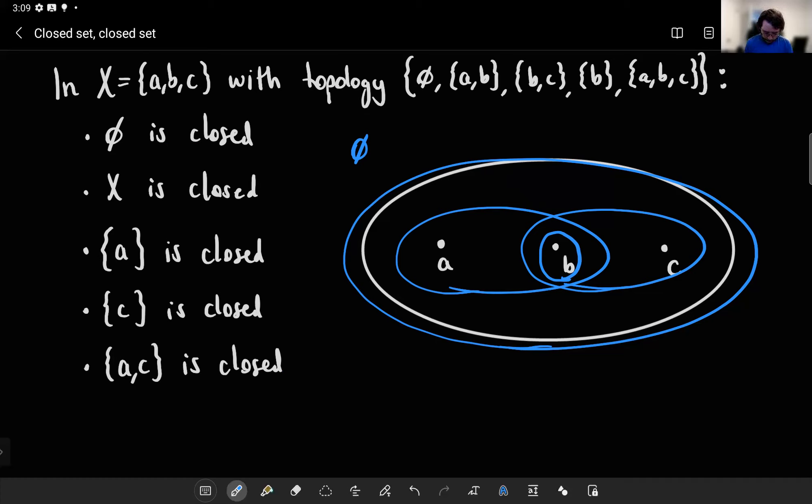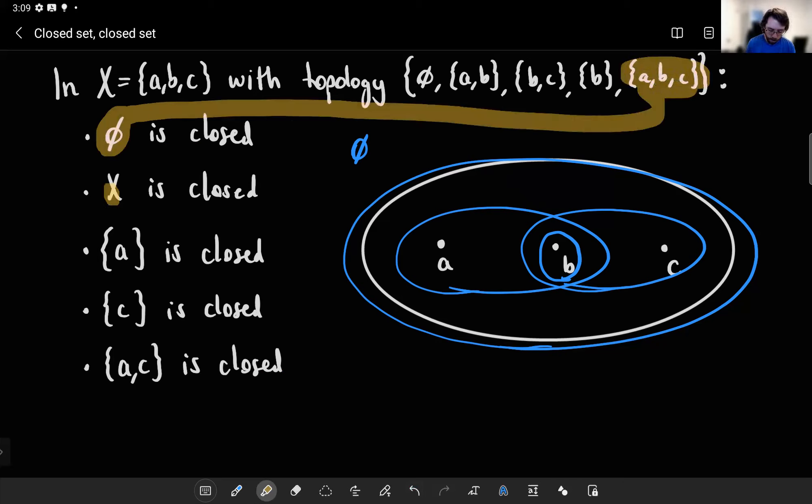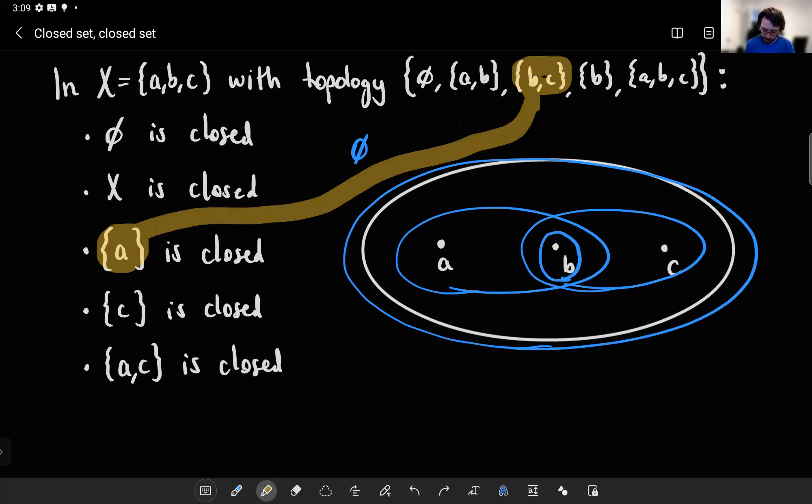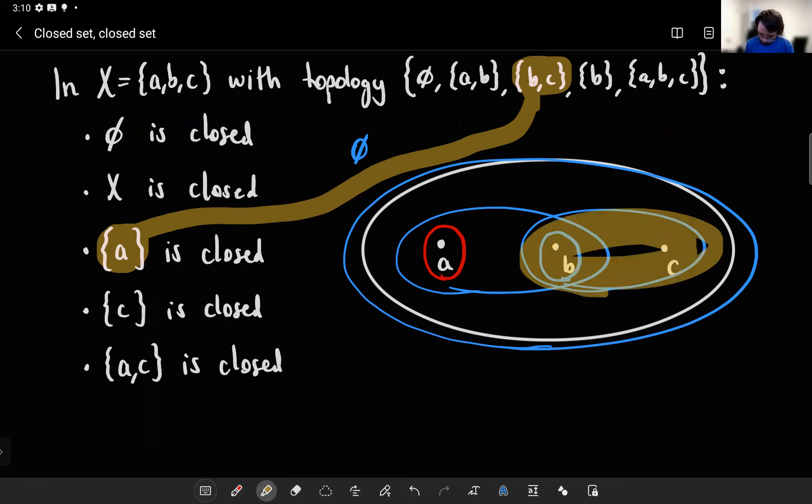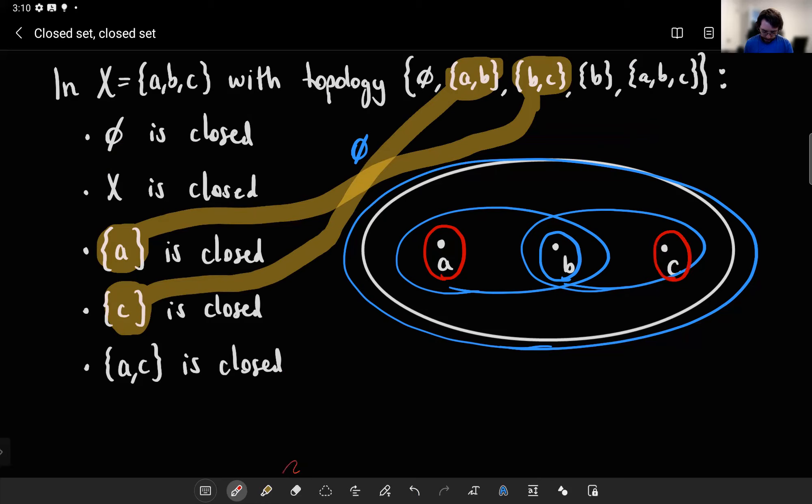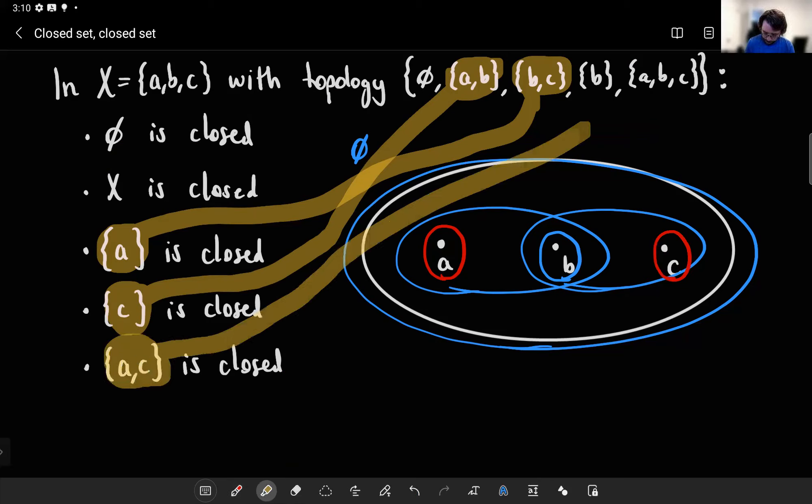And it turns out the empty set is closed because it's the complement of the whole space. The whole space is closed because it's the complement of the empty set. The singleton A is closed - well, if it's closed, it has to be the complement of some open set. And indeed, it's the complement of this, right? Everything but B and C is just the singleton set A. Similarly, C is closed because it's the complement of this one. And A,C is a closed set - A,C is the complement of B, and that's certainly an open set.